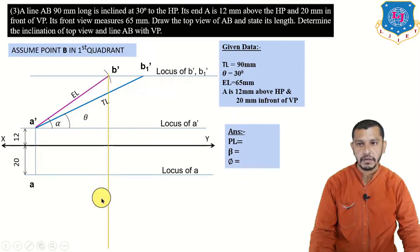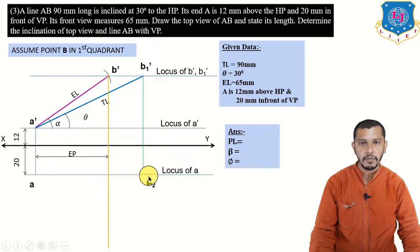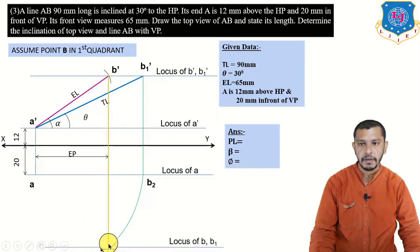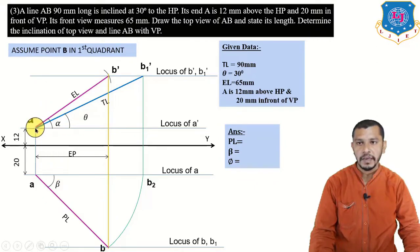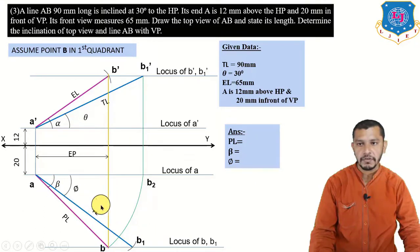Draw end projectors from B-dash as a straight line. From B1-dash, draw a straight line up to the locus of A — this gives B2, which represents the plan length. To find the plan of B, take center at A with radius equal to A to B2 (the plan length) and give an arc on the projector — here we get B. Connect B to A to get the plan length and angle beta. Measure the true length 90 mm from A on the locus of B — here we get B1. Connect B1 to A to get the true length and angle phi.